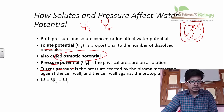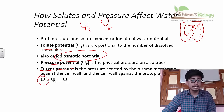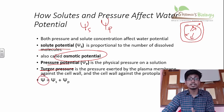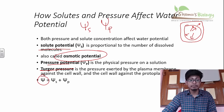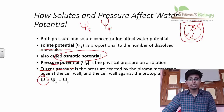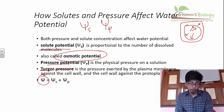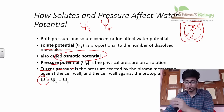We calculate water potential with the formula: ψ equals ψS plus ψP, where ψS is solute potential and ψP is pressure potential. So water potential equals solute potential plus pressure potential.